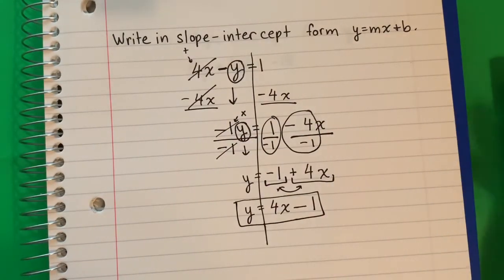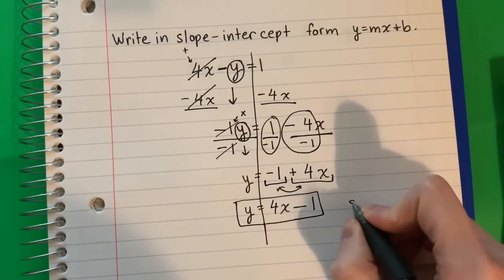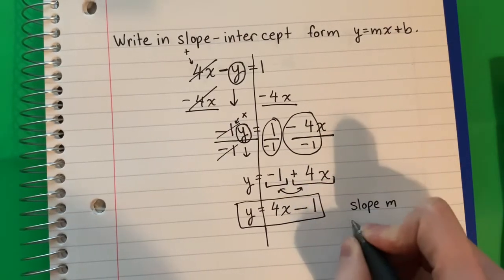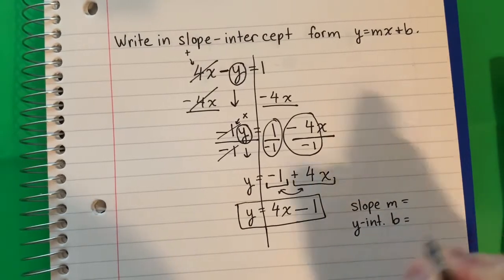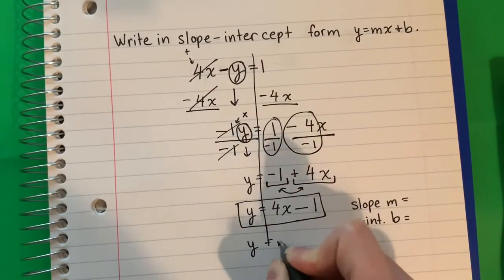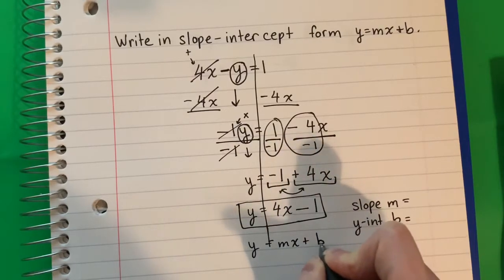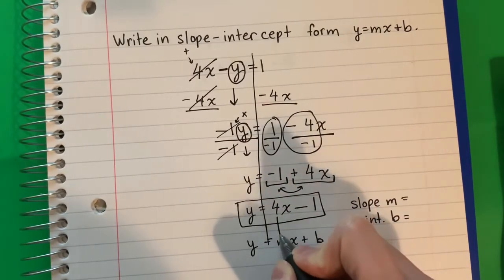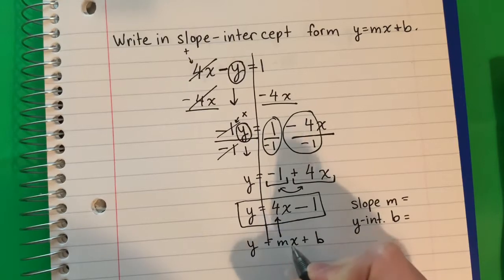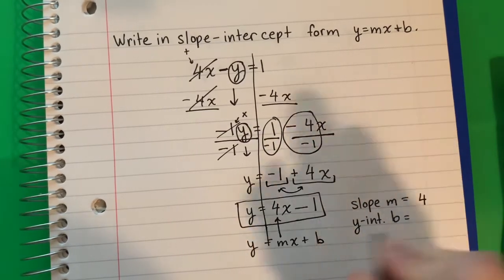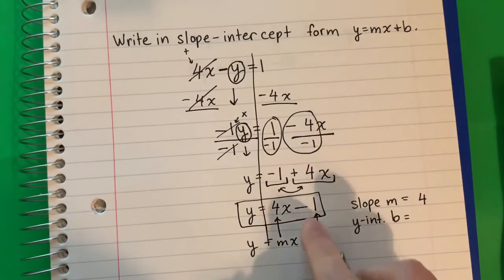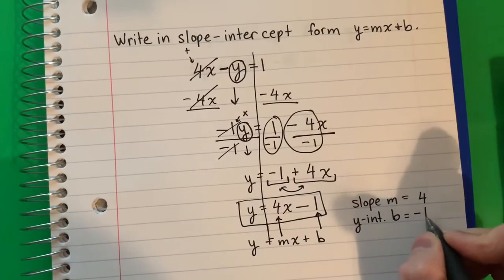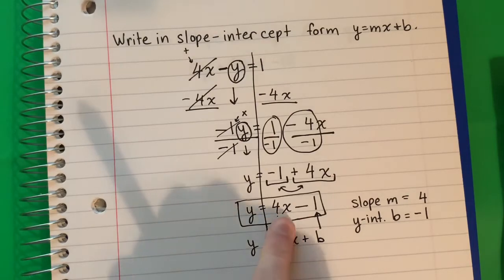Let's identify the slope and the y-intercept. Slope is m and the y-intercept is b. Remember it's y equals mx plus b. The number with the x is m, so 4 is m. And the number with no variable, no letter, is b — so b is negative 1. This is my answer: y equals 4x minus 1.